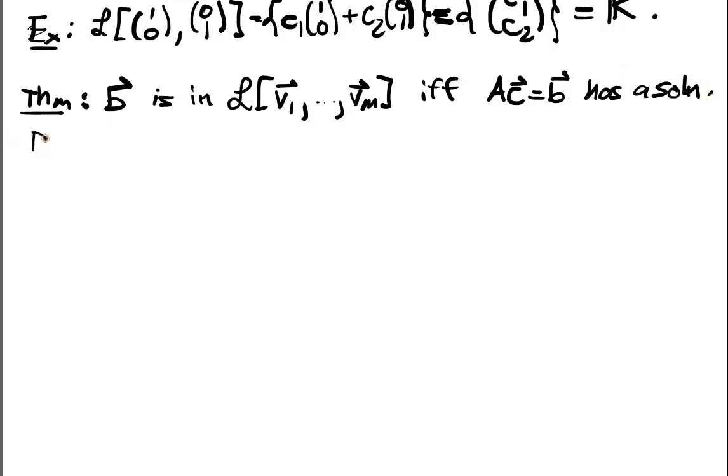And here of course we're assuming that A is just the matrix obtained by putting all the Vs in the columns of A. So it's this matrix where I put all the vectors in the columns.